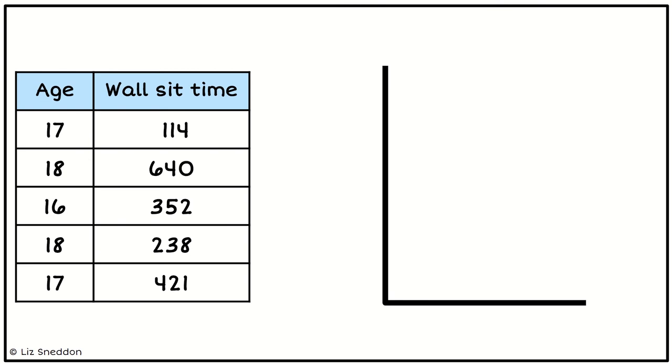First of all I need my two axes, so I'm going to put age along my horizontal axis. I notice that the ages go from 16, 17, and 18 years old, so that's what I'm going to put across this axis.